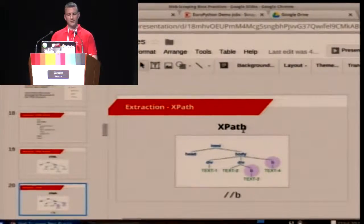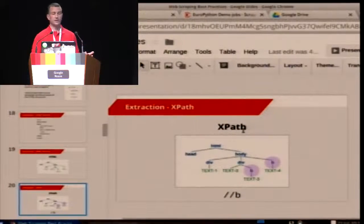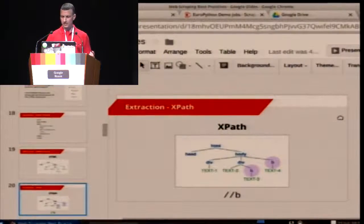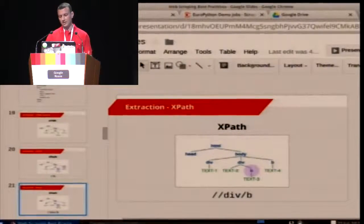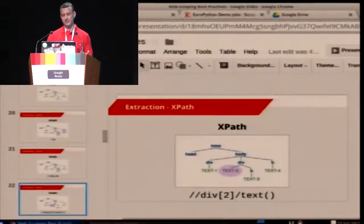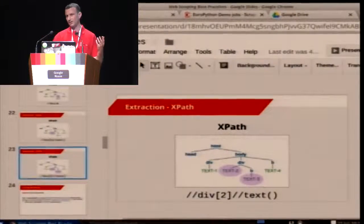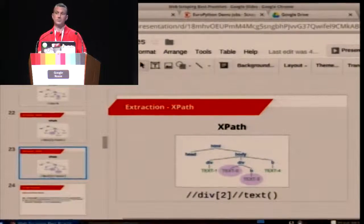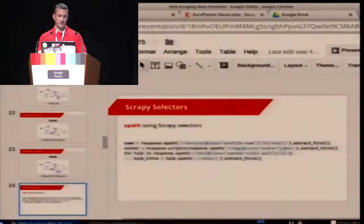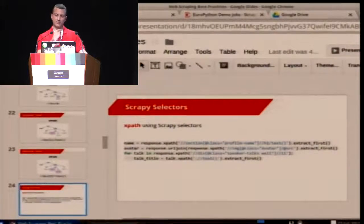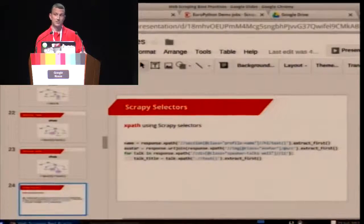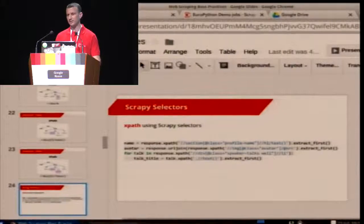I quite like XPath as a way to do this — it's very powerful. You can select all bold tags, or a bold tag under a div, or the text from the second div tag. It lets you specify rules and it's really worth learning if you're doing a lot of this. Scrapy provides a nice way to call XPath or CSS selectors on responses — this is probably the most common way to scrape content from a small set of known websites.